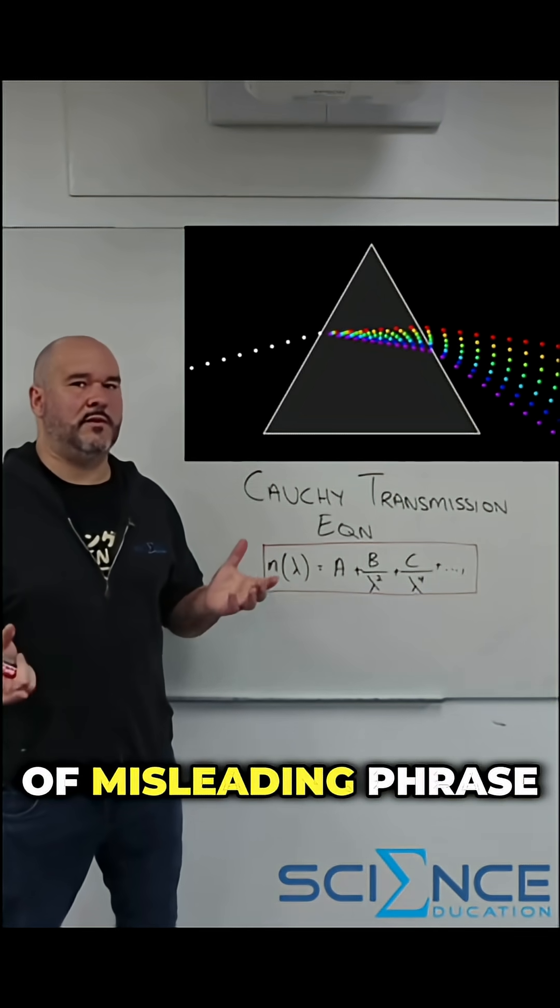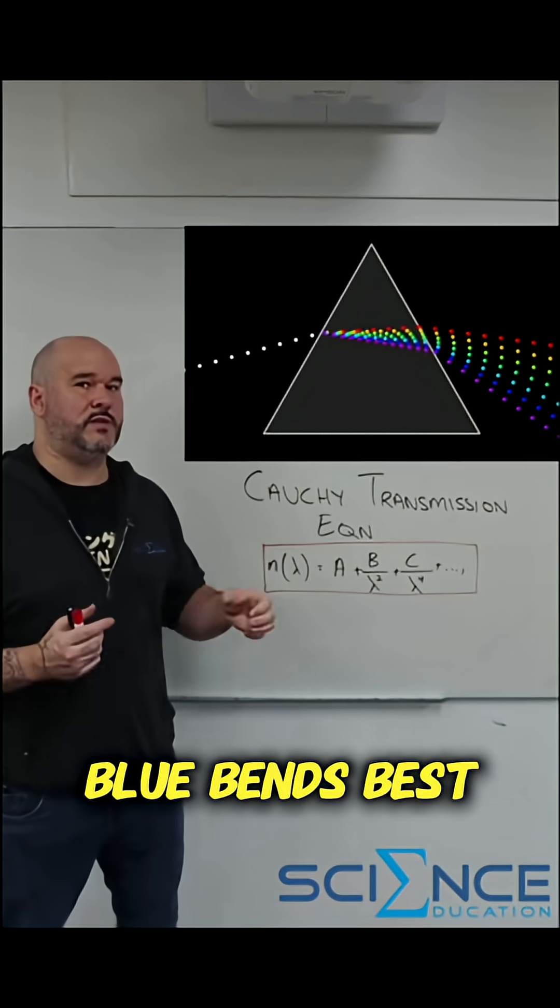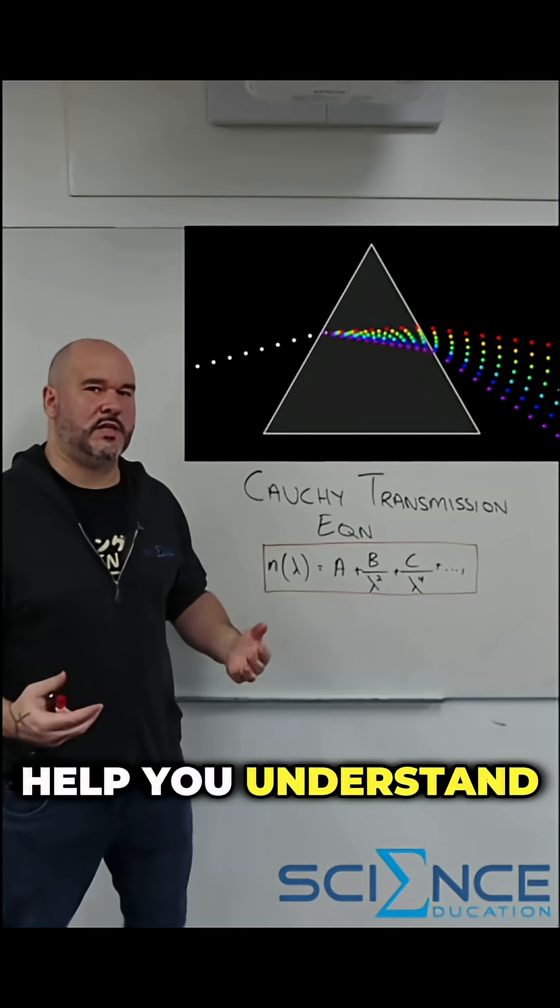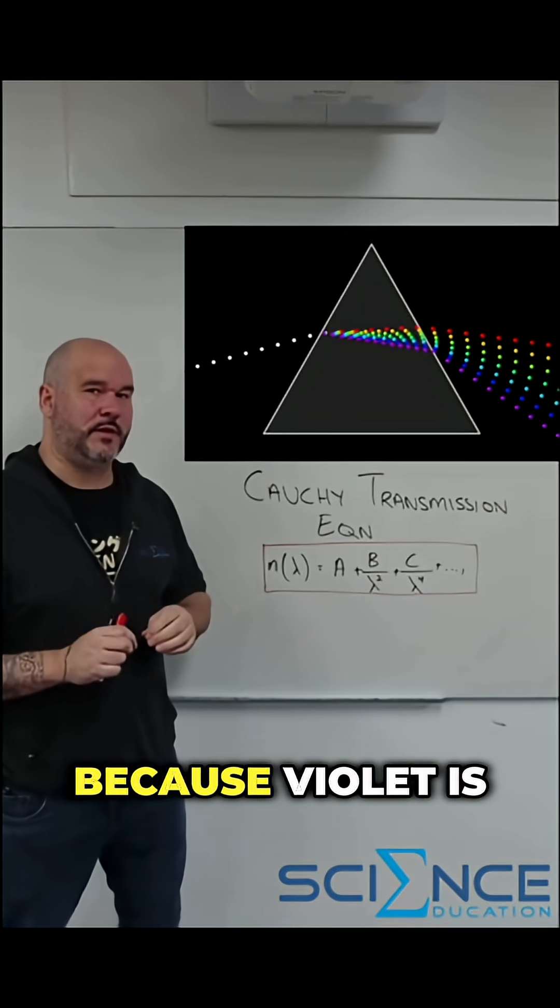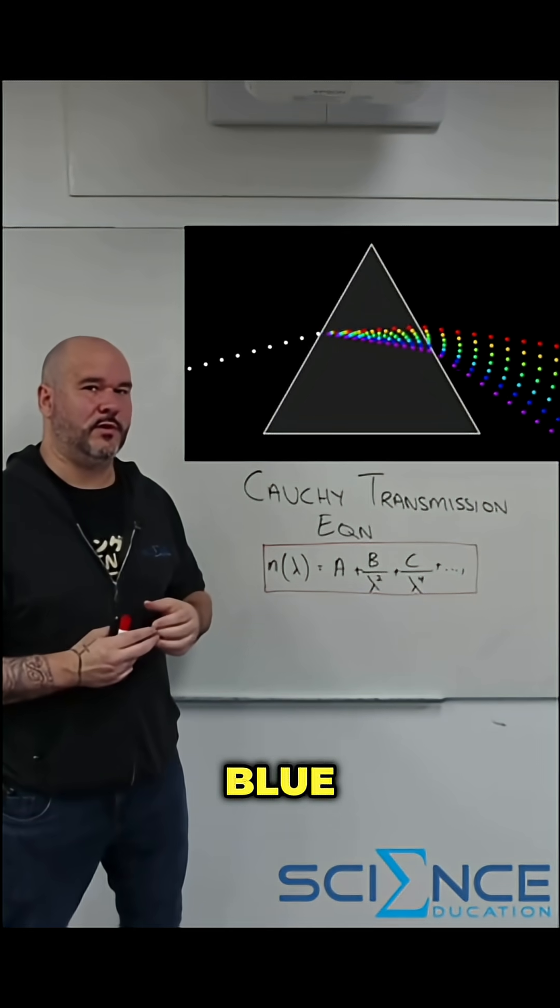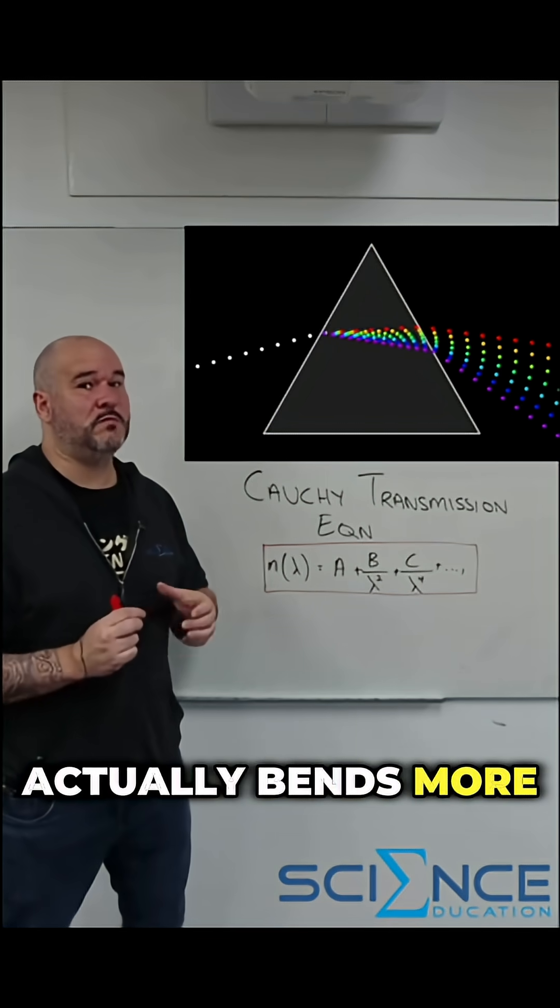Now a little kind of misleading phrase that's often used is blue bends best and that's to help you understand that the shorter wavelengths bend more. It's actually not blue bends best because violet is shorter wavelength than blue and therefore violet actually bends more than blue.